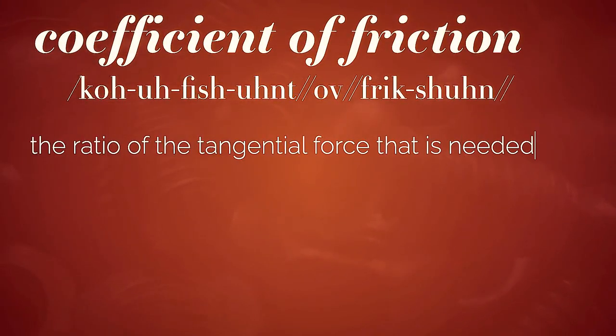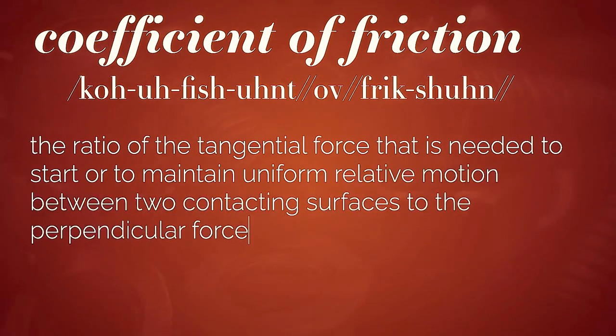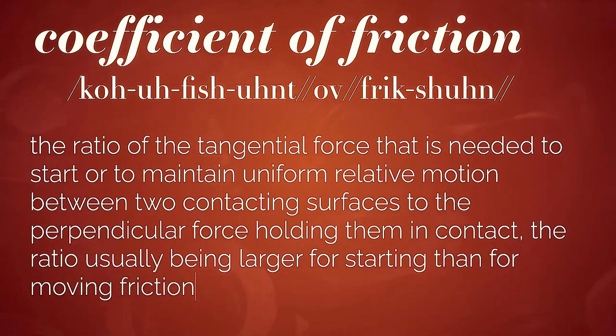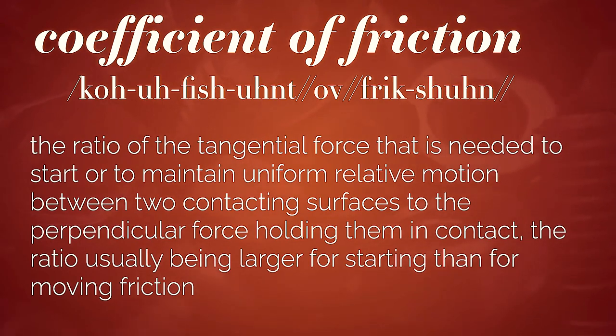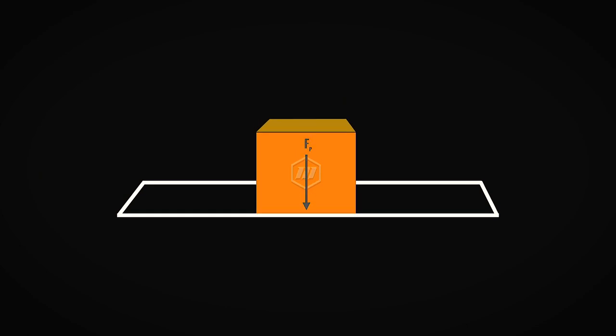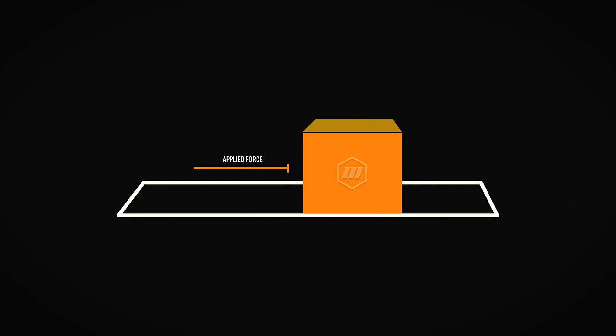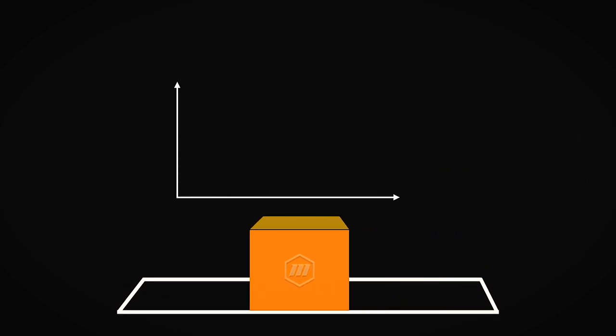If we take a look at the actual coefficient of friction, which is one of the components that certainly takes place within the torquing process — this is the ratio of the tangential force that's needed to start or maintain uniform relative motion between two contacting surfaces perpendicular to the force holding them in contact. Sometimes it may take more force to get that movement started than the actual friction. If we look at this graphically, we have our cube here which has the force pressing down on it — let's call that gravity — and then we have our tangential force that we are going to use to move this block.